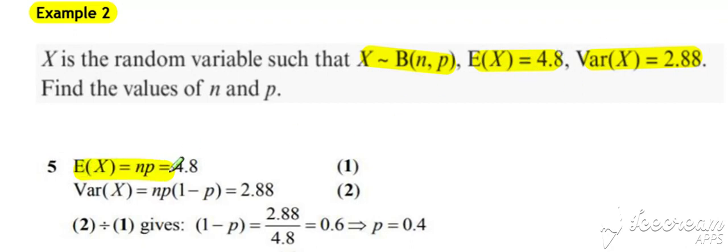Expected value of X is equal to np, the variance of X is equal to np times 1 minus p for a binomial. In this example, n and p are unknown, but we know that np is 4.8 and np times 1 minus p is 2.88.